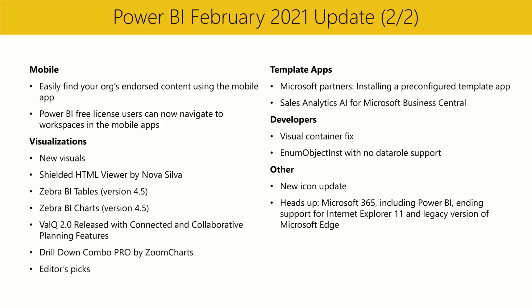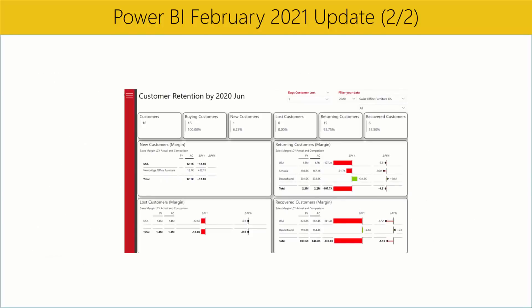This month's template app is Sales Analytics AI for Microsoft Business Central. With this template app, you leverage your investment in Business Central, extending your business process management with analytical capabilities to improve your business performance. It provides detailed breakdowns of your sales and order book, customer retention metrics, and more. The only requirement is to download and install the free Business Central extension as part of the solution. Check out the links in the video description below if you're interested.